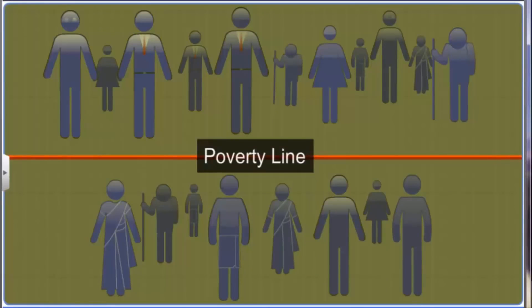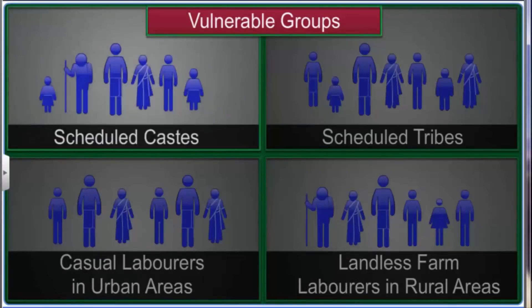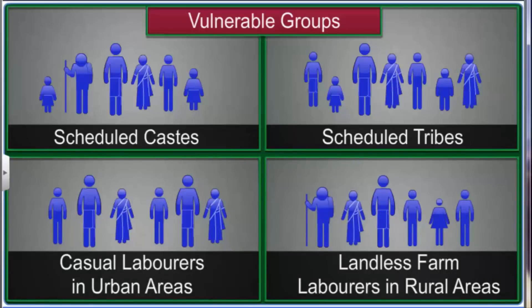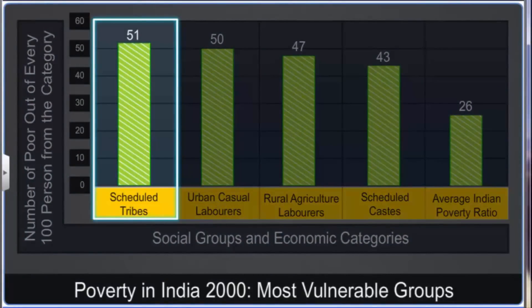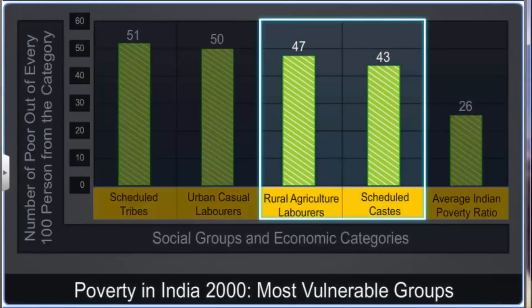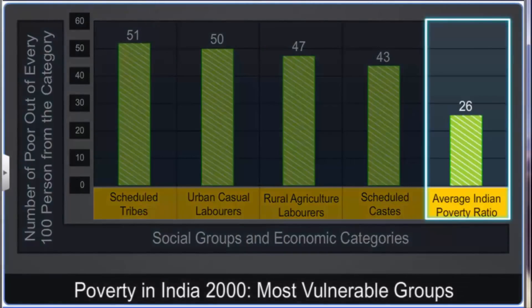Some groups and communities are more vulnerable to poverty than others. Some of the groups most vulnerable to poverty are people belonging to the scheduled castes and tribes, casual laborers in urban areas and landless farm laborers in rural areas. 51 out of every 100 people belonging to the scheduled tribes live below the poverty line. Similarly, 50 out of every 100 casual laborers in urban areas are poor, with figures of 47 and 43 for farm laborers and people belonging to the scheduled castes respectively. All these figures are much higher than the national average of 26 out of every 100 people.